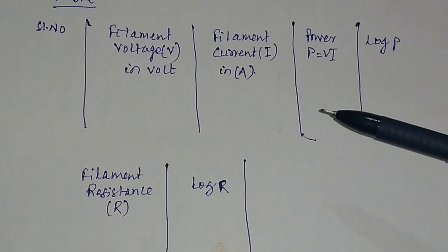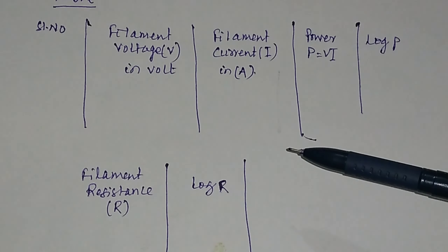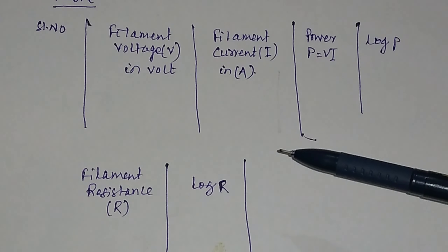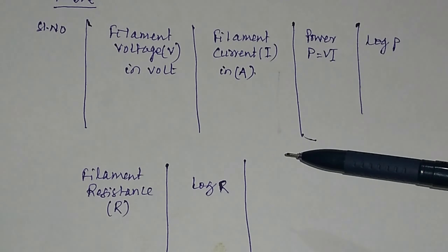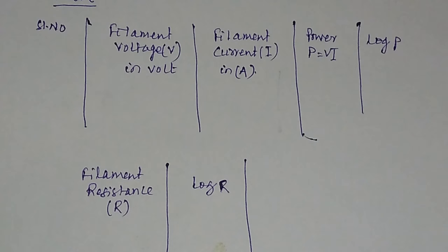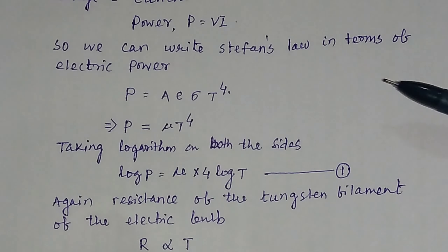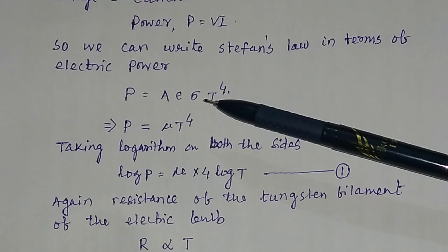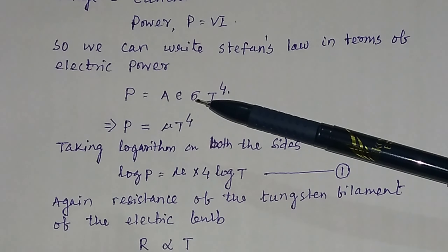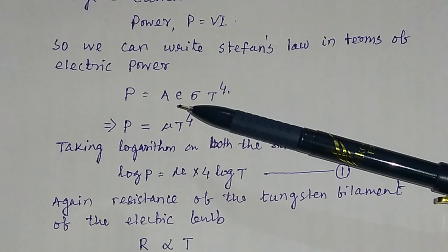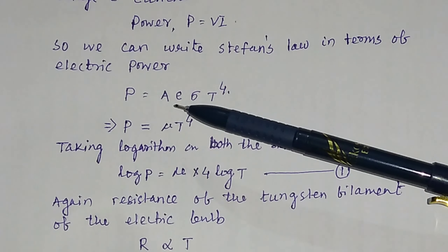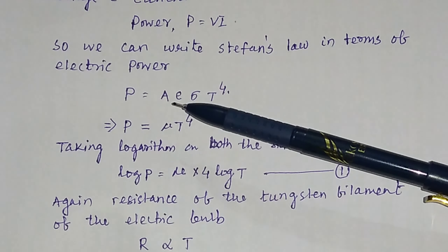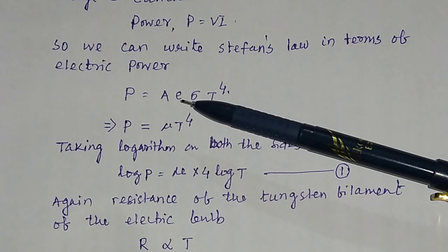That means, in place of heat, we can use the term power: P = E·A·σ·T⁴. Since area, emissivity, and Stefan's constant are all constants, P will be equal to a constant μ times T to the power 4. If you take the logarithm on both sides, you will get: log P = μ × 4 × log T. Suppose this is equation number 1.